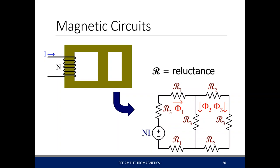With this, you can actually do circuit analysis to solve for different parameters flowing through the given geometry. We model these as resistors — not necessarily having a resistance. They actually have what we call a reluctance.